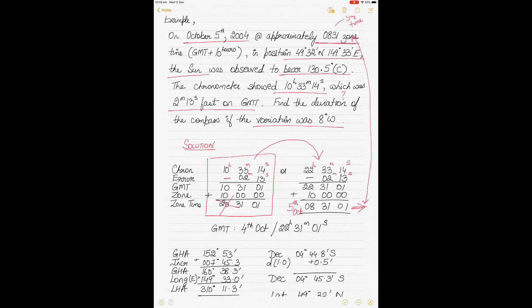Because the ship is 10 hours ahead of GMT, at the GMT longitude the date must still be the 4th of October — it's not yet the 5th of October at the GMT meridian. So our GMT is 4th October 22:31:01. Don't use zone time for the rest of the calculations — use the GMT time.